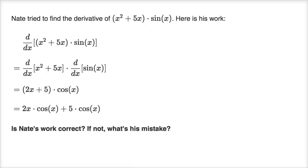What we're going to do in this video is look at the work of other people as they try to take derivatives and see if their reasoning is correct, and if it's not correct, try to identify what they should have done or where their reasoning went wrong. So over here it says Nate tried to find the derivative of x squared plus five x times sine of x. Here is his work.